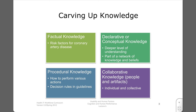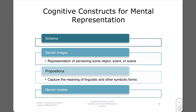Knowledge is often shared among members of a team, in a workplace, or even among members of a culture. Cognitive constructs provide us with ways to talk and think about knowledge. Mental models are the most important construct in the context of HCI or human factors research, but it is helpful to have an understanding of some of the other concepts.